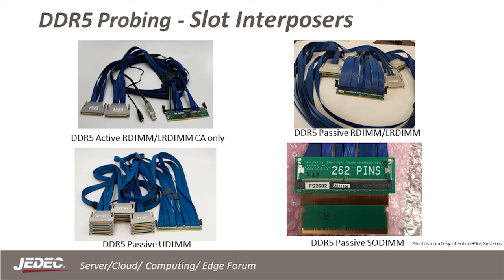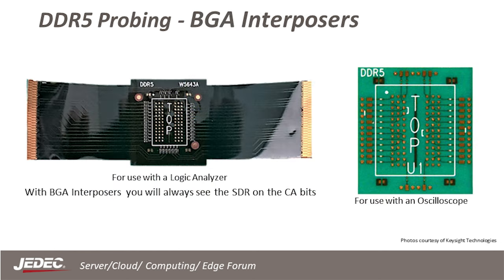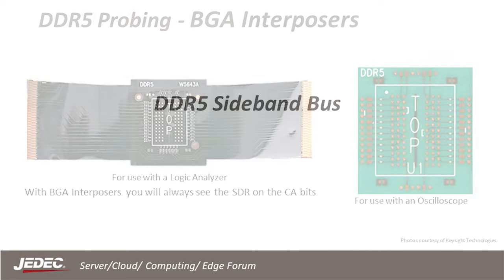Here are some pictures of passive interposers for UDIMM, LRDIMM, and SODIMM, and an active slot interposer for RDIMM and LRDIMM. Due to the higher speeds, probing memory-down for DDR5 can also be another challenge. Shown here are two different kinds of memory-down probing for DDR5 — the one on the right is for scope probing and the one on the left is for the logic analyzer.